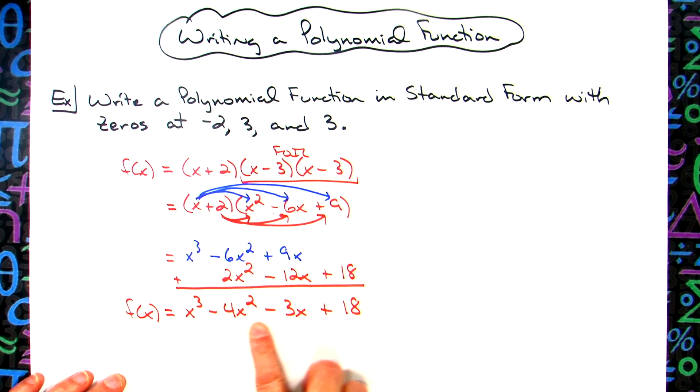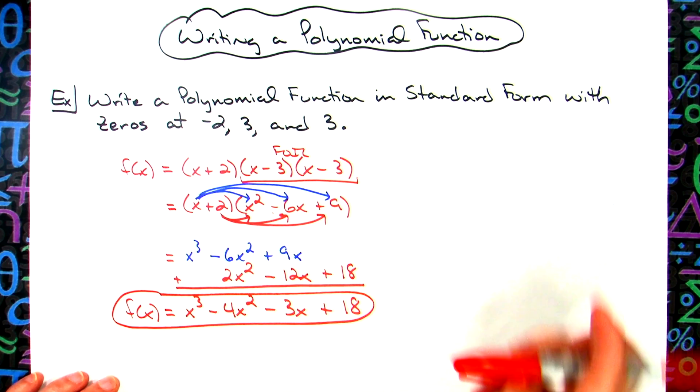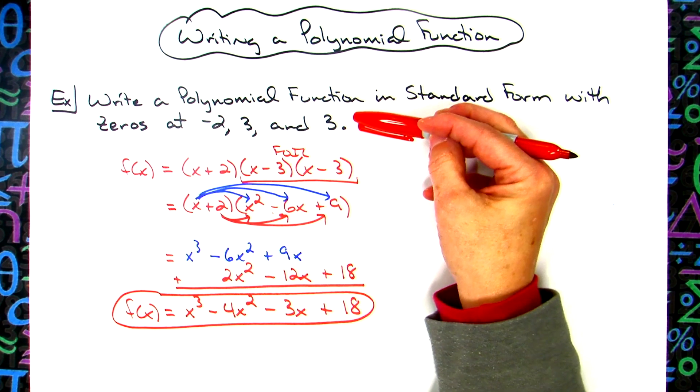I am in standard form because the exponents are decreasing. So I have a polynomial function written in standard form that had the zeros of negative two, three, and three.